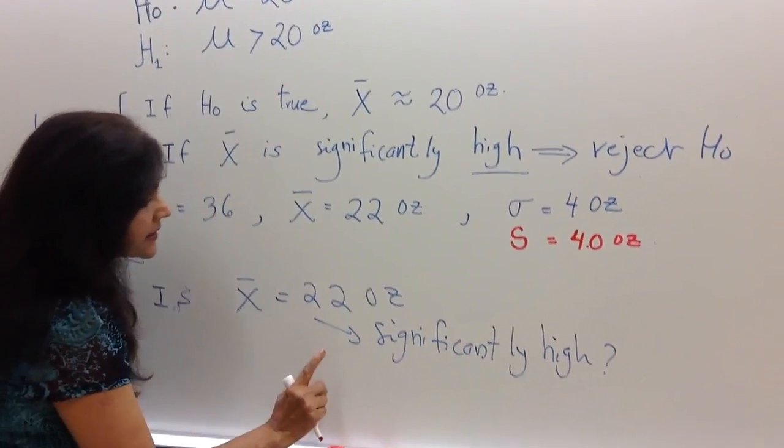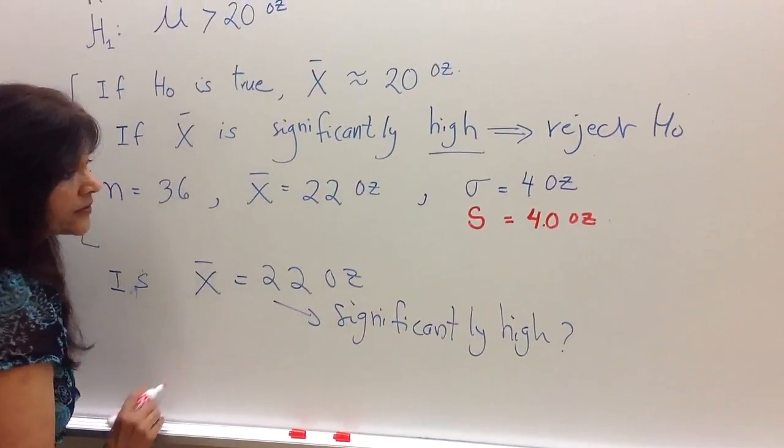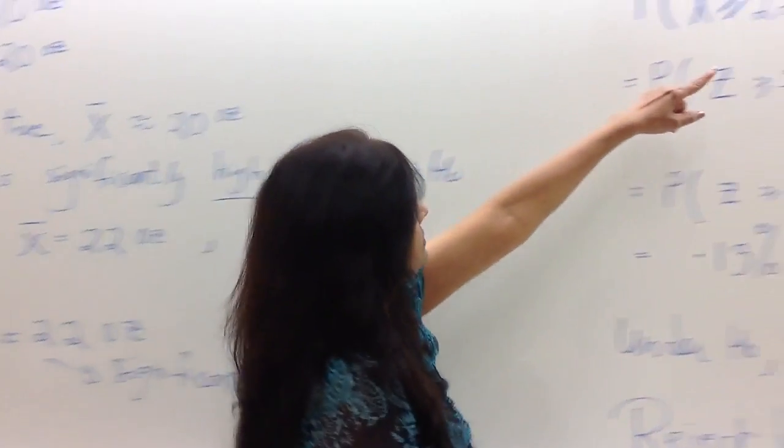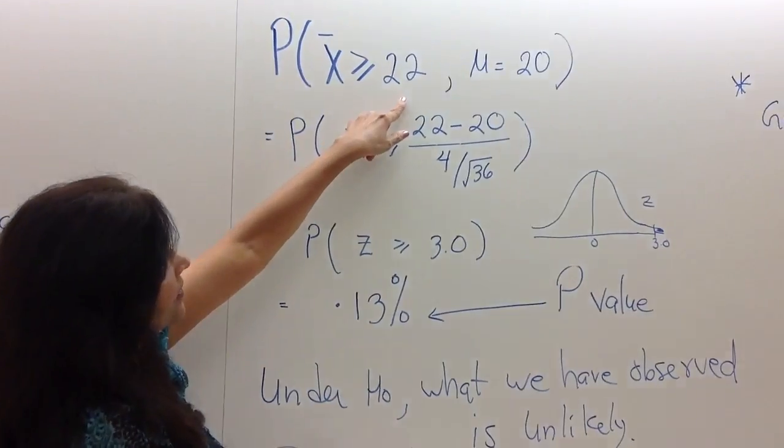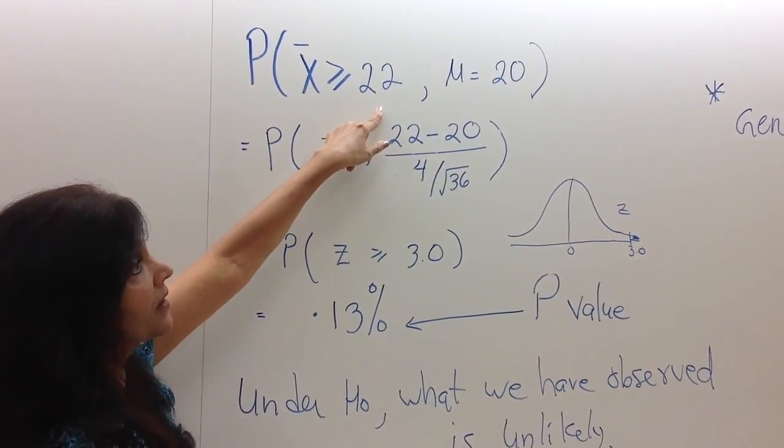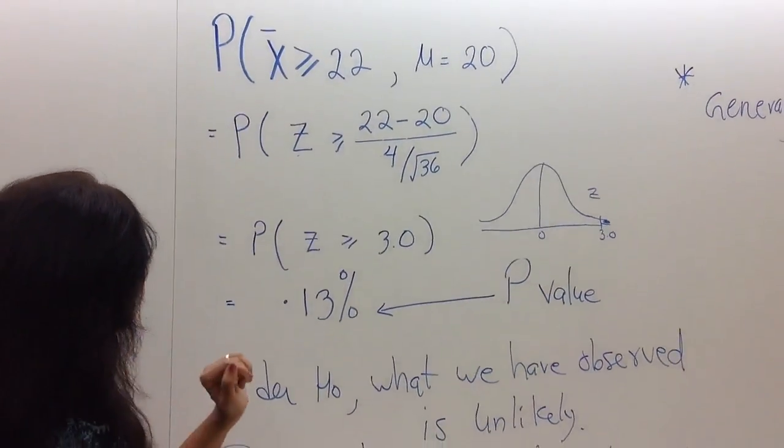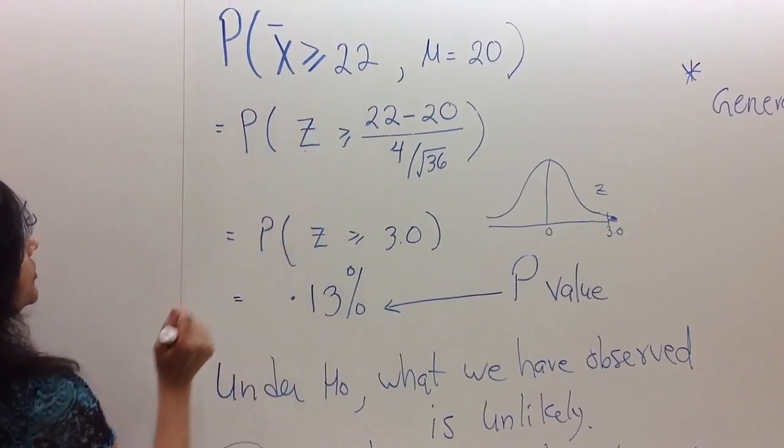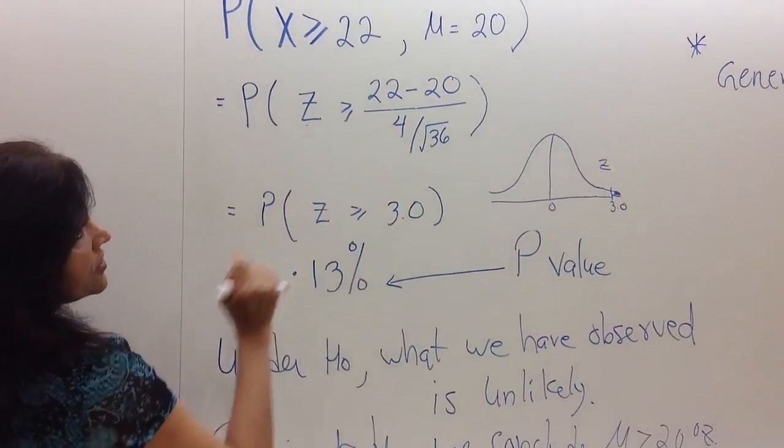So let's see what changes that will bring. Question is still, is X̄ of 22 ounces significantly high? Again, the probability that we are calculating is the same. Is X̄, what is the probability that X̄ could be as high or higher than 22?